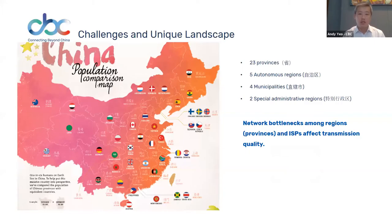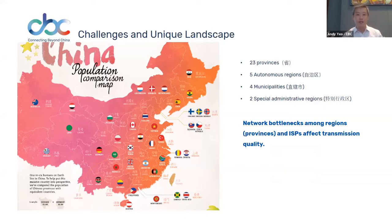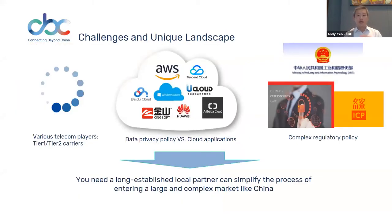China has 23 provinces and five autonomous regions, and there are differences in contracting arrangements, regulation, and even in the telecom networking world — including different legislation and different data protection requirements, as Adam and Thomas reiterated earlier. The telecom market in China is classified into tier-one, tier-two, and other carriers. CBC considers itself a tier-two carrier with an A2 license. Many enterprises are now redesigning their strategies due to the complex regulatory environment, particularly the cybersecurity law amended in 2018.